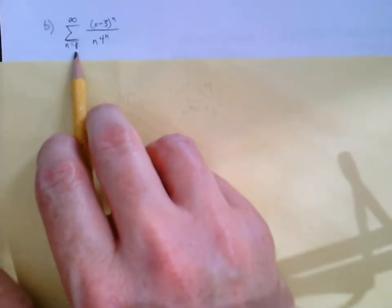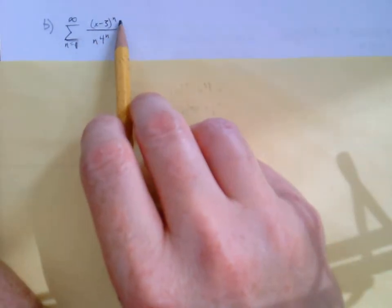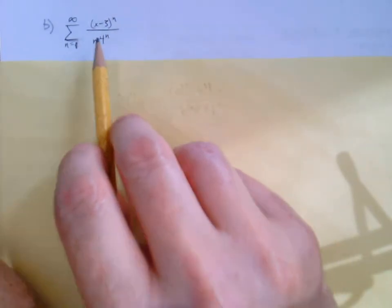Okay, here's our second example. It's the sum from n equals 1 to infinity of x minus 3 to the n over n times 4 to the n.